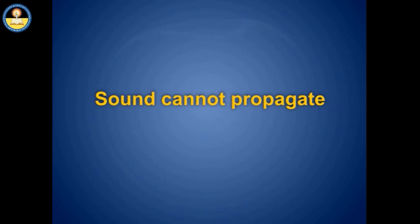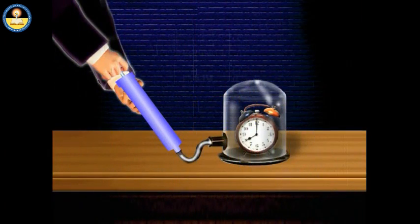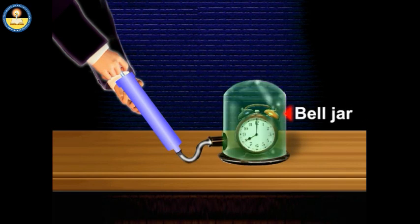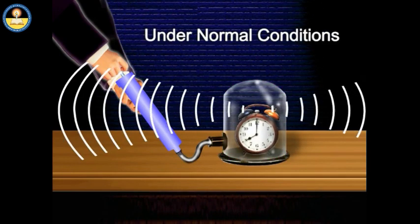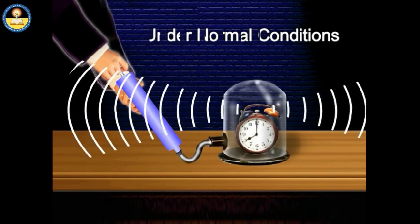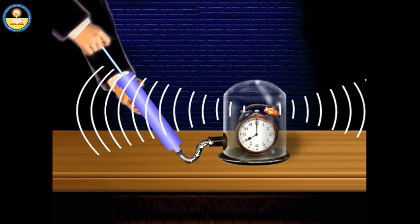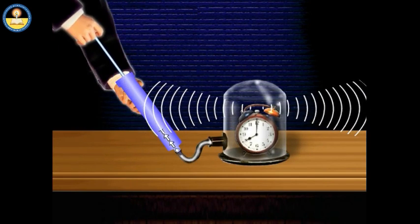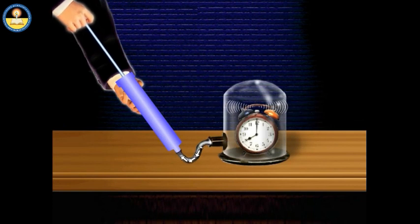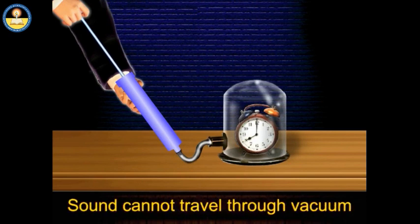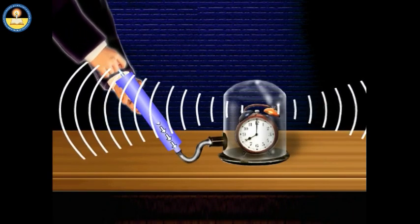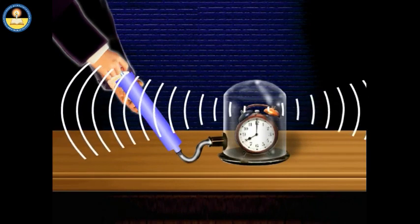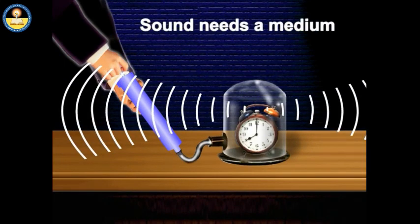Sound cannot propagate without a medium; that is, it cannot travel through vacuum. To justify this, keep an alarm clock covered with an inverted bell jar. The alarm is clearly heard when it rings under normal conditions. Now, if we gradually exhaust the air out of the bell jar through a pump, a partial vacuum is created and the audibility of the sound decreases. This shows that sound cannot travel through vacuum. The sound comes back if the air is pumped in again. This simply proves that sound needs a medium for its propagation.